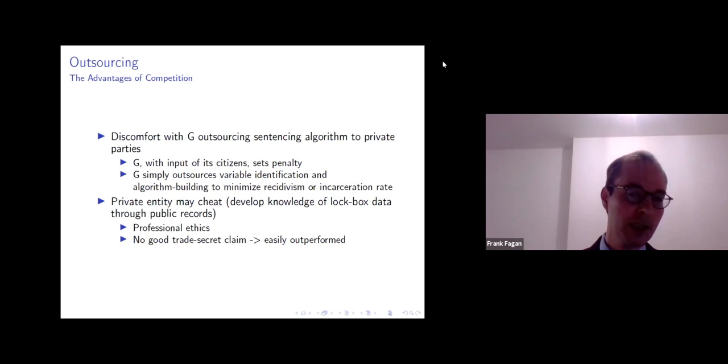And there's certainly possibilities that a private entity or we could imagine even Loomis offering his own algorithm, he may cheat. He could develop knowledge of that data that's set aside in the state's lockbox by combing through public records and by backward induction somehow developing some type of expected value of what's inside of the state's lockbox. But perhaps professional ethics of algorithm builders could constrain these private entities that would be building these algorithms. And in any case, if the private entity or the private person is cheating, then they wouldn't have a good trade secret claim. And then once that algorithm's opened up, it would be easily outperformed through retrofitting.